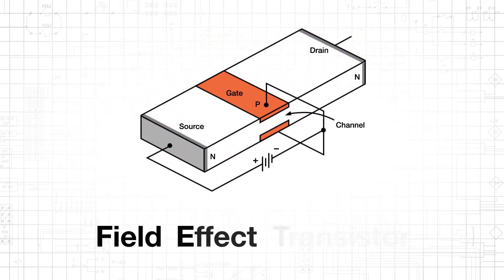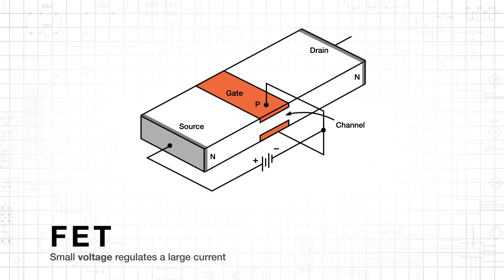As the name implies, a field effect transistor, or FET, uses an electric field to regulate current. So a FET allows a small voltage to regulate a large current, while a BJT allows a small current to regulate a large current.